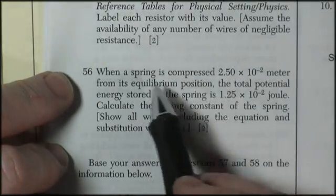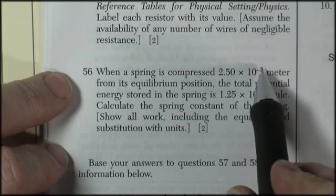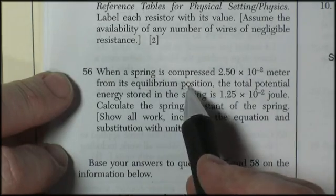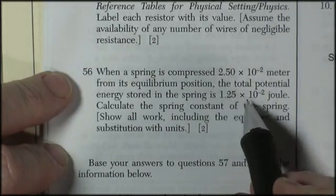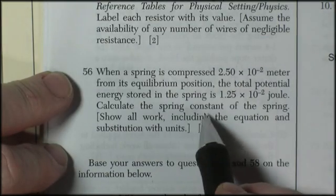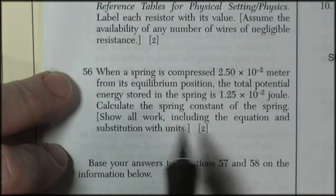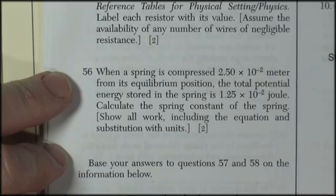Question 56. When a spring is compressed 2.5 times 10 to the negative 2 meters from its equilibrium position, the total potential energy stored in the spring is 1.25 times 10 to the negative 2 joules. Calculate the spring constant of the spring, showing all work including the equation and substitution with units.